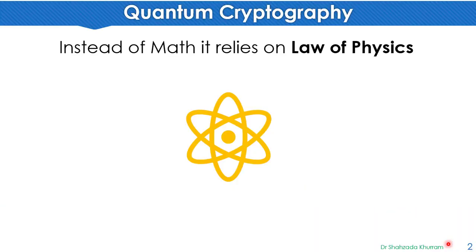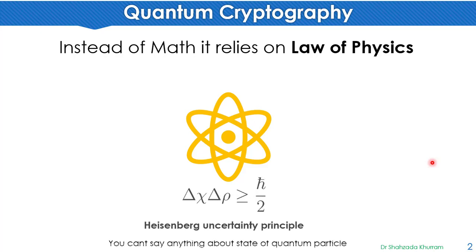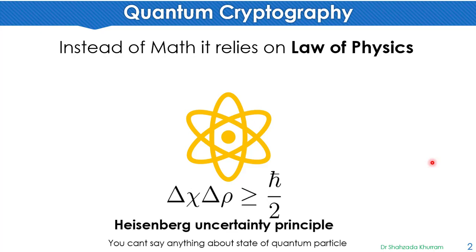Quantum cryptography, instead of math, it relies on the laws of physics. One particular law is Heisenberg's Uncertainty Principle. This law means that you can't say anything definitive about the state of quantum particles.